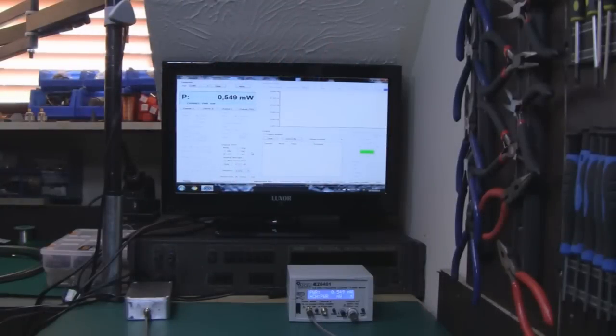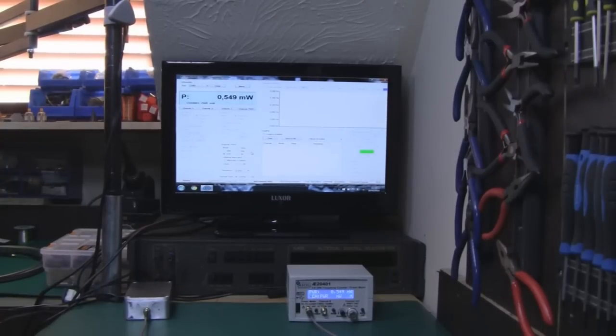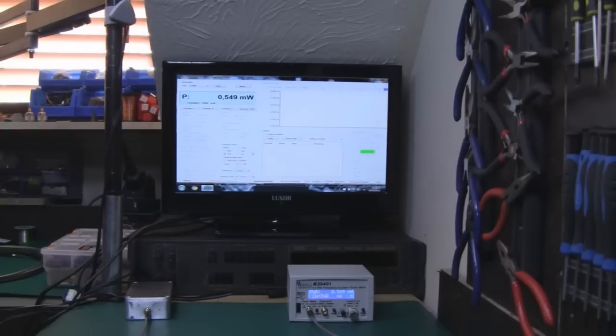We've got the RG316 hooked up and we've got the 600 milliwatts going in and going down the line. Coming out the other end we're getting 549 milliwatts, so we're losing 51 milliwatts. That's not too bad really when you consider how thin this coax is and the excessive length of the pigtail. I wouldn't normally use such a long piece of coax for a pigtail, so it's actually pretty good coax, I'm actually impressed with that.